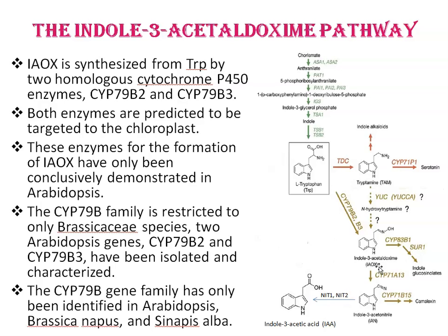The CYP79B family is restricted to Brassicaceae species. Two Arabidopsis genes, CYP79B2 and CYP79B3, have been isolated and characterized, and the CYP79B gene family has only been identified in Arabidopsis, Brassica napus, and Sinapis alba. The dashed mustard-colored arrows in the diagram indicate steps for which genes and enzymatic functions remain poorly understood.